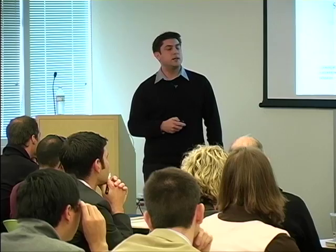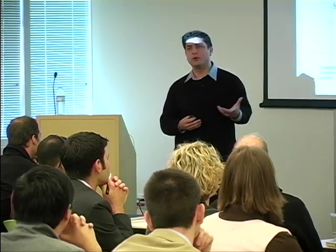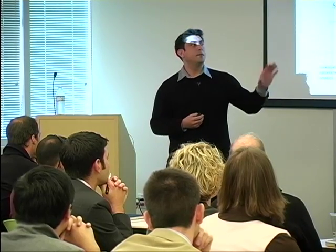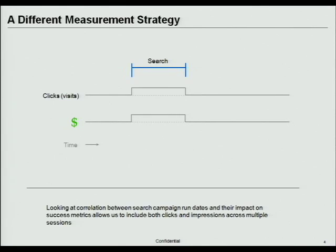Instead of looking at the traditional way — which is how many people click and convert — we spend a lot of time looking at whether we can correlate different activities and different market inputs with a bunch of different responses. What this translates to, instead of a click being stored with a cookie and converting, we're looking at total number of clicks over time, total conversions or revenue over time, and layering on the different market inputs.